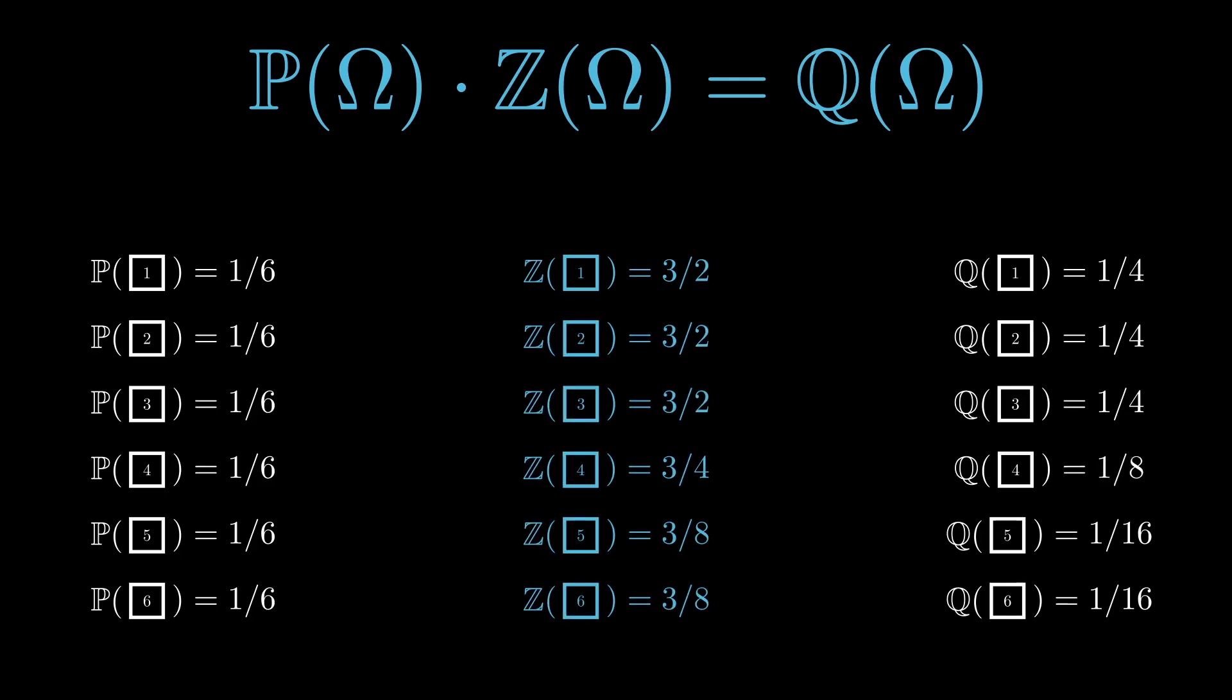Hence, if we let one of the probabilities become 0, we can't find a Z that maps the probability of Q back to P.